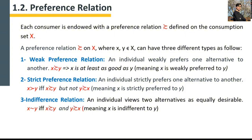A preference relation on consumption set X, where x and y are two options — or in case of bundles, two bundles, or two goods, two services, or any options in your consumption set as elements of that set — can have three different types of preference relation. The first, which is the foundation for explaining the next two types, is the weak preference relation.